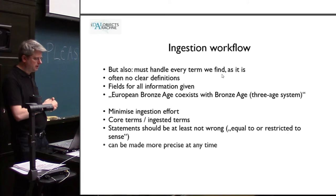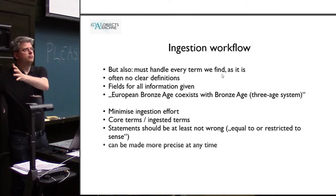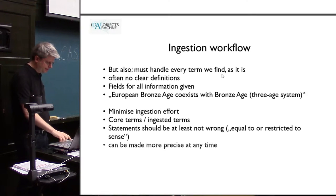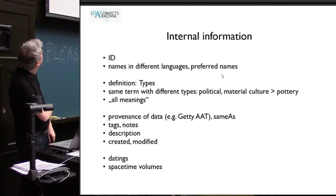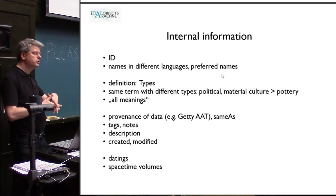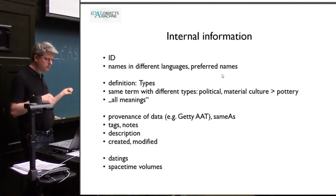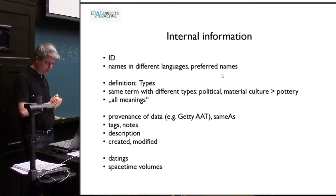This is the trade-off: we want to have a very nice system but we need to get the data in. So we have a few fields that describe the internal information of the dataset. Of course we have the idea, we have names in different languages, we have types — which is the thesaurus part — and the rest is more like a classification system.